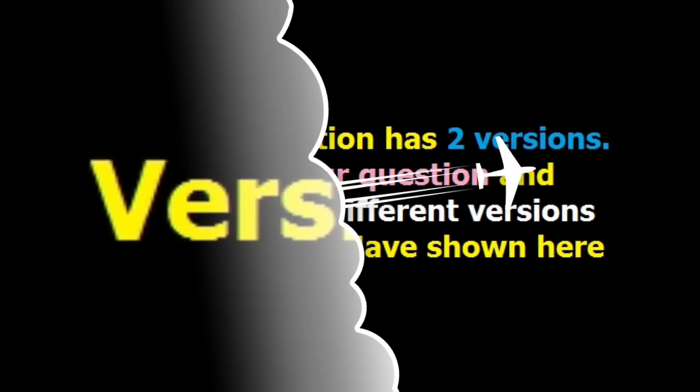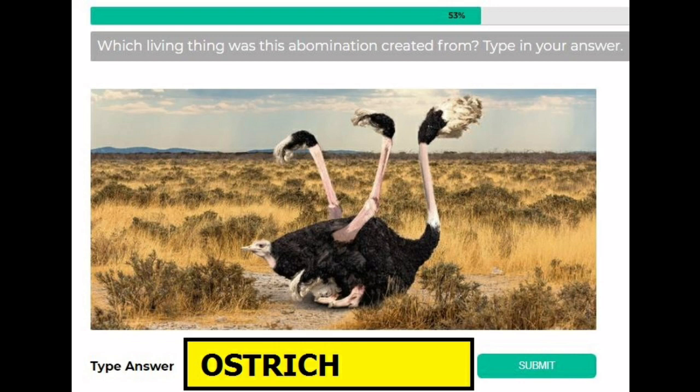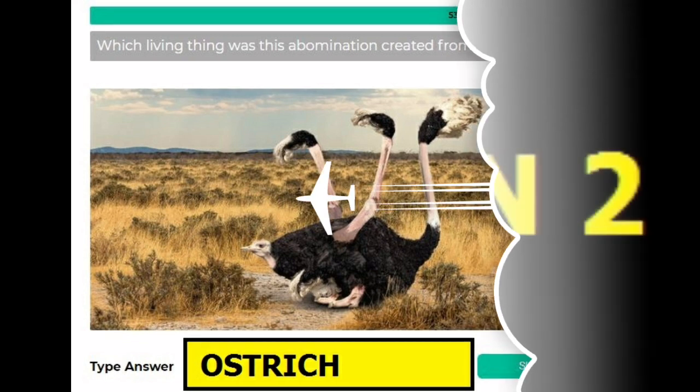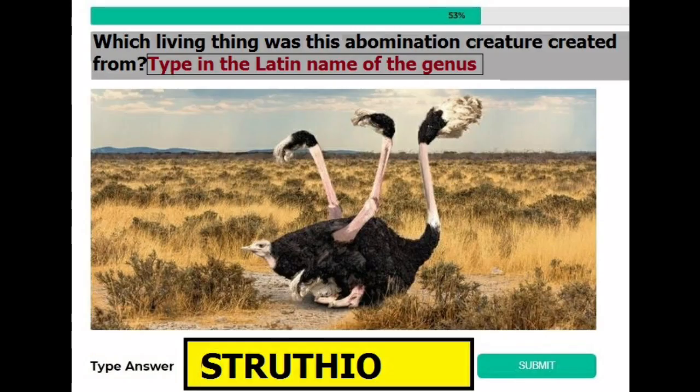You can see the question. In version 1, the last sentence only says 'type in your answer,' so if you find that version then your answer is ostrich. For version 2, the last sentence says 'type in the Latin name of the genus,' which is different from the previous one. You can write the answer in small letters or capital letters, both are acceptable.